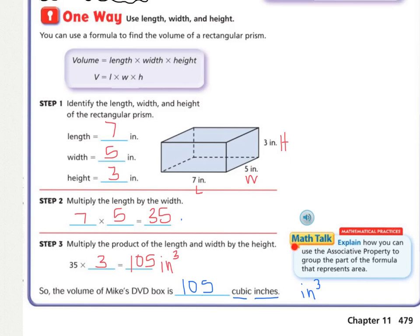Looking at this math talk here real quick, it says explain how you can use the associative property to group the part of the formula that represents the area. So remember the associative property is the use of parentheses, and so it could have been 7 times 5 times 3. So what were the two dimensions that we multiplied first? It was the 7 and 5. So this is the length and the width, which is how you find area as well. So that's how you use the associative property to group the part that represents the area, using parentheses.